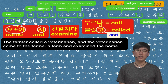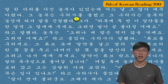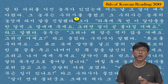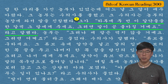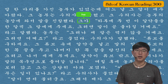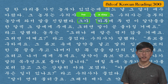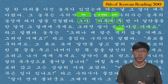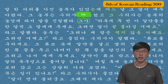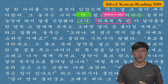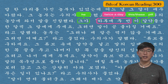The third sentence: 그가 하루에 두 번 이 알약들을 한 알씩 그 말에게 주세요 그러면 말이 곧 좋아질 거예요 라고 말했다 — He said: Give the horse one of these pills twice a day and then he'll soon get better. 그가 is 'he.' 하루 is 'a day,' 에 means 'per,' 두 is 'two,' 번 is 'number of times,' so 두 번 is 'twice,' and 하루에 두 번 is 'twice a day.' 이 is 'this/these' and 알약 is 'pill.'